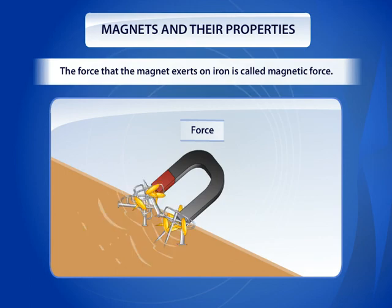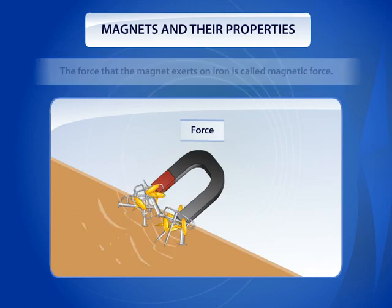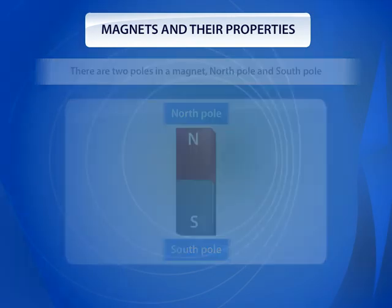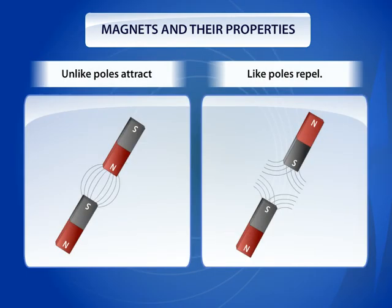There are two poles in a magnet: North Pole and South Pole. Unlike poles of a magnet attract each other, while like poles repel.